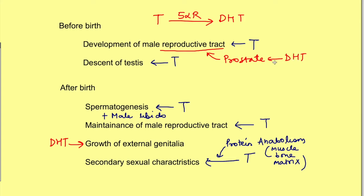You may be aware of benign prostatic hyperplasia. In this condition, if we give the drug finasteride, which is a 5-alpha reductase blocker, it blocks the enzyme 5-alpha reductase. As a result, dihydrotestosterone cannot be formed from testosterone, and it will not be able to act on the prostate gland. That is the reason finasteride works in benign prostatic hyperplasia. So DHT is responsible for development and enlargement of external genitals.